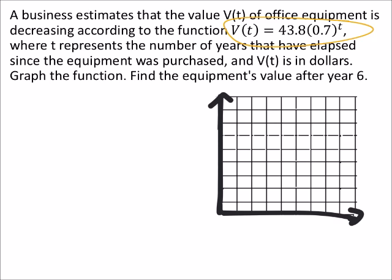We're only looking at the first quadrant on this because we are looking at values and time. Time is always going to be our x-axis, and on this one we can see that the value is dependent on the time because it's V(t).